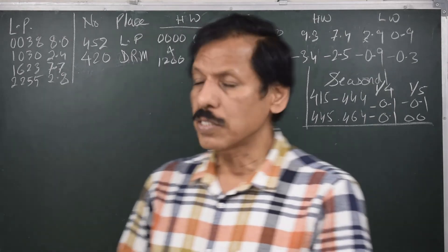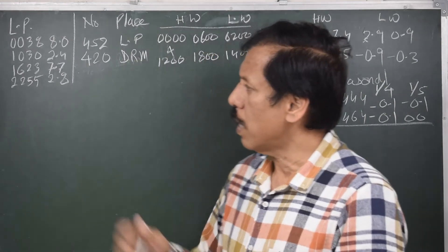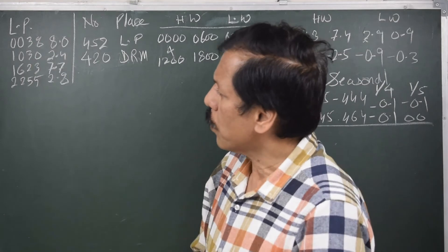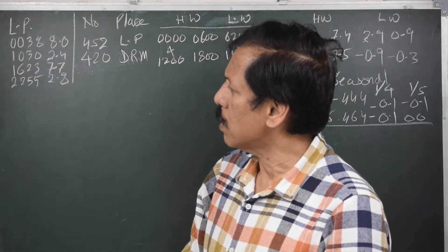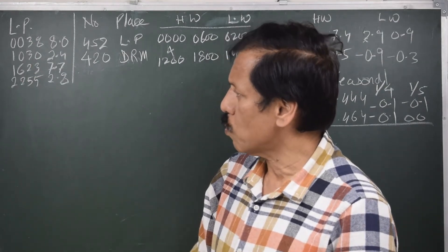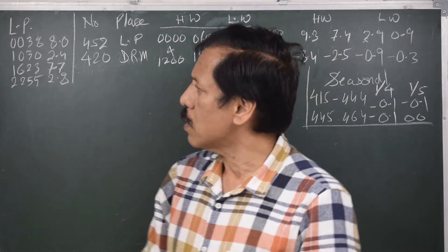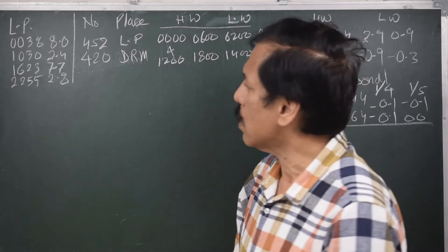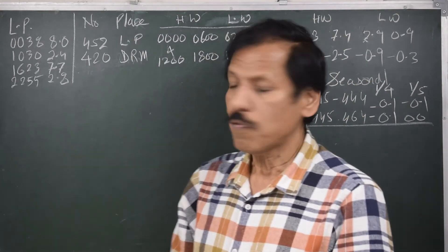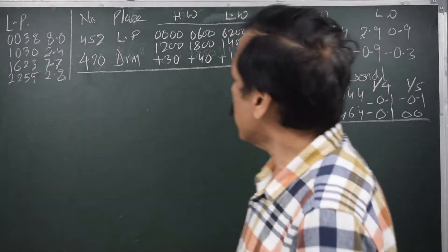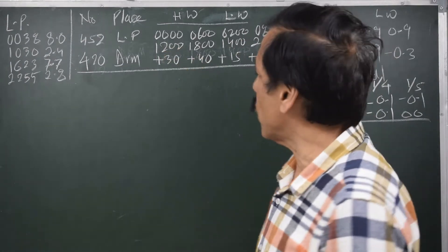What are the predictions given in part 1? I write down. So Liverpool, as you can see, high water is 8 meters, low water is 2.4 meters and so on. The first tidal prediction time that is given is 0038 for 8 meters, 1030, 2.4, etc. So I have written down the Liverpool times. These are the predictions from part 1.